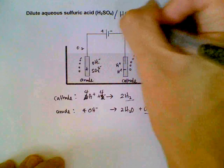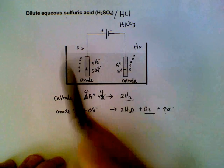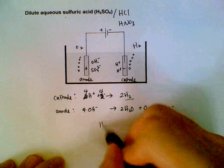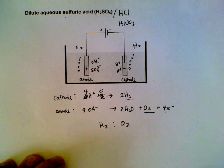So in other words, electrolysis of dilute acids essentially is an electrolysis of water. We will get hydrogen gas and oxygen gas in the ratio two is to one by volume.